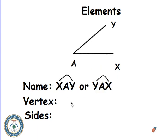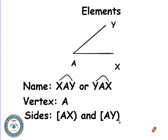The name of this angle is XAY or YAX. The vertex is point A, the intersection point. The sides are half lines: AX, closed at A and open from X, and AY, closed at A and open from Y. Both half lines are the sides of the angle.